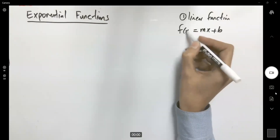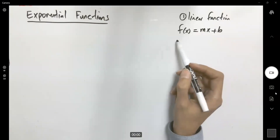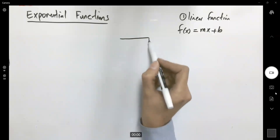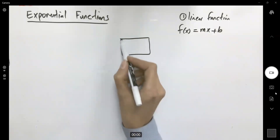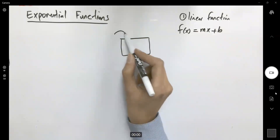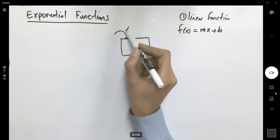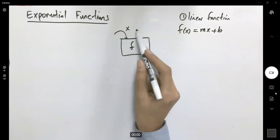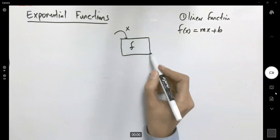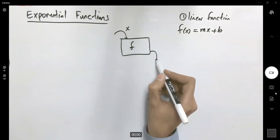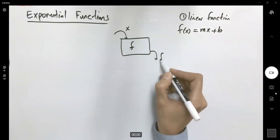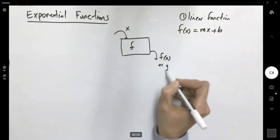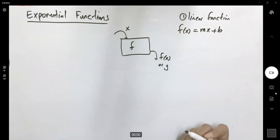Remember that f acts like a machine. You plug in some input values into f, your function changes those input values and gives us some output values — f of x, or y values.